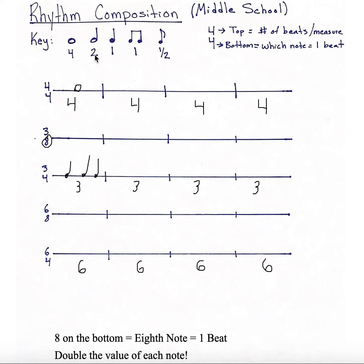Your half note now equals 4 beats because we're doubling the value. You can't use it in 3/8 because that's too many, but you could use it in the 6/8 measures. For the 3/8 and 6/8, I'd like you to do the same thing you're doing for the 4/4, 3/4, and 6/4 measures — find 4 different ways to fill the correct number of beats. Again, you can repeat notes, so you can use a quarter note more than once, but you just can't use the same rhythm.